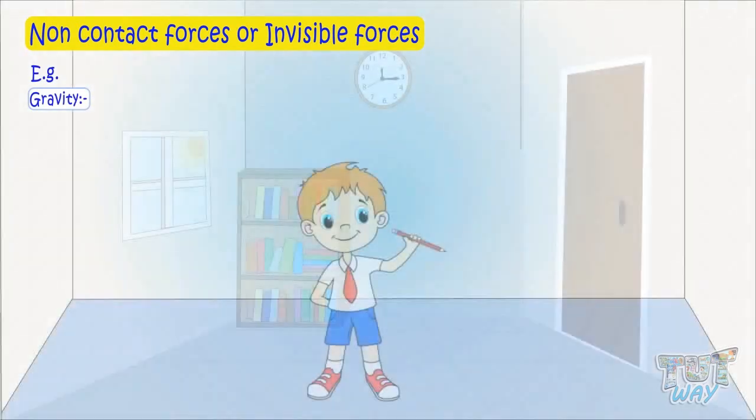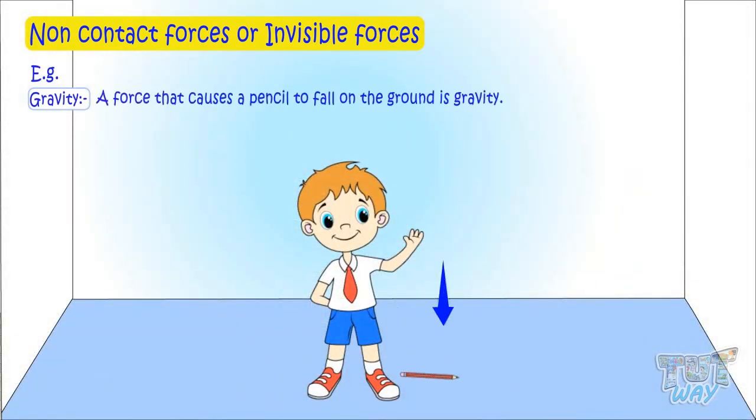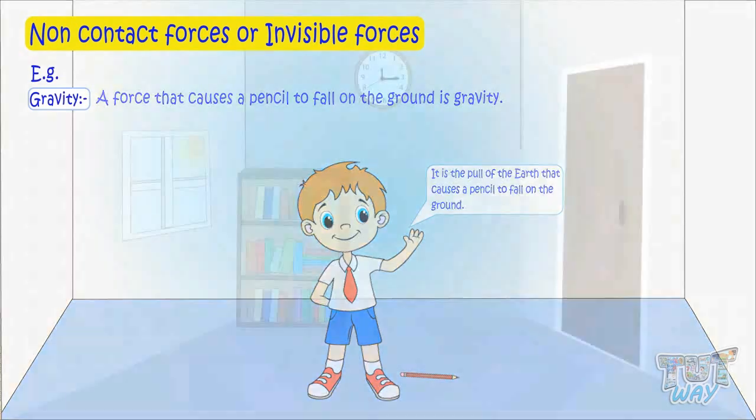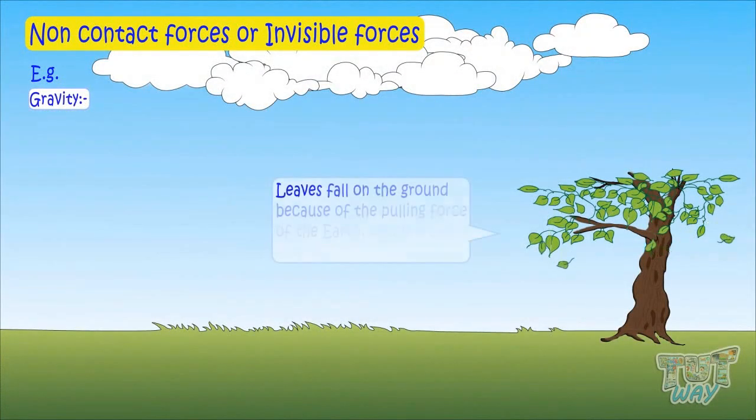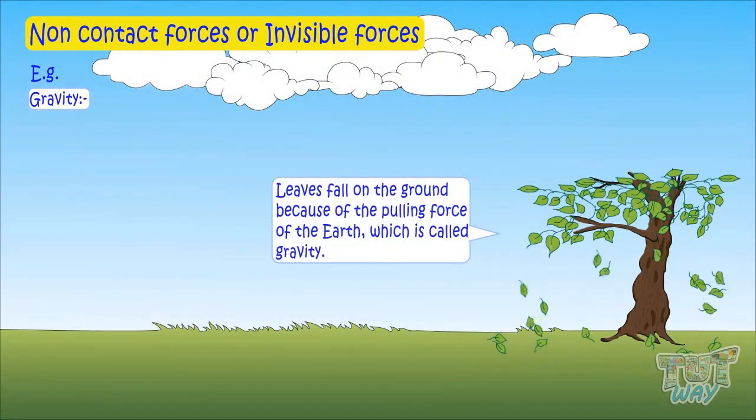Examples: gravity. A force that causes a pencil to fall on the ground is gravity. It is the pull of the earth that causes the pencil to fall on the ground. Leaves fall from the tree to the ground. Why? Because there is a pull from the earth.